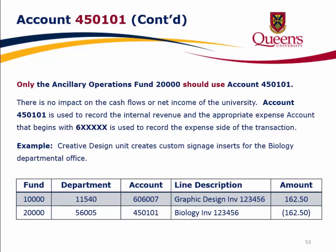Only the ancillary operations fund 20,000 should use account 450101. There is no impact on the cash flows or net income of the university. Account 450101 records the internal revenue, and the appropriate expense account beginning with 6 records the expense side of the transaction. For example, when the Creative Design Unit creates custom signage for the Biology Departmental Office, the journal entry would be a debit to fund 10,000, Department 11540, account 606007, and a credit to fund 20,000, Department 56005, account 450101.